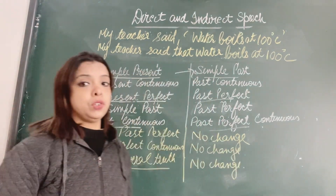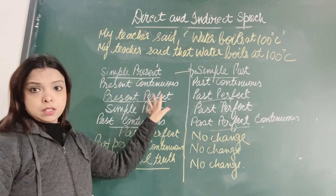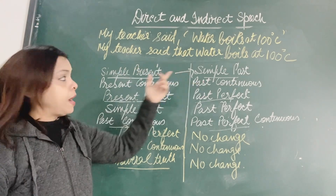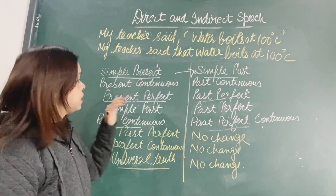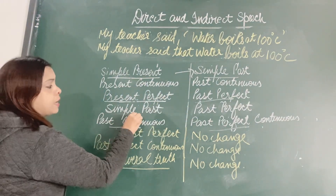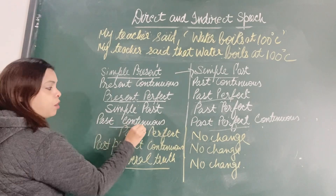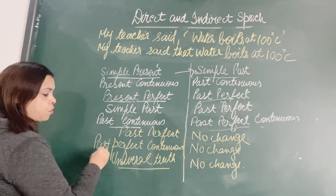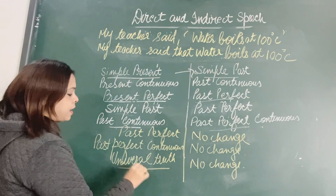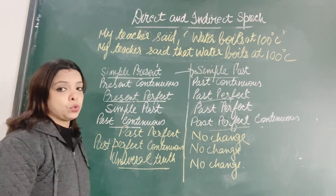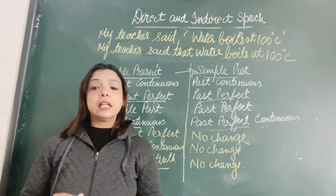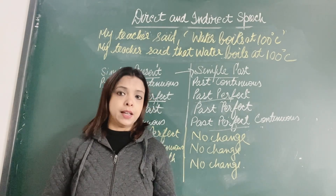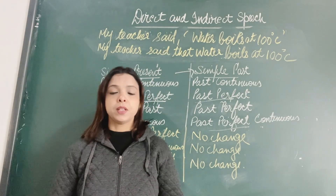So this is how we change the tense from direct to indirect speech: simple present to simple past, present continuous to past continuous, present perfect to past perfect, simple past to past perfect, past continuous to past perfect continuous. If the sentence is past perfect or past perfect continuous, or tells a universal truth, there is no change. I hope it is clear how we change sentences from direct to indirect speech. Please go through the chapter once again, and the examples will make it even clearer. Thank you.